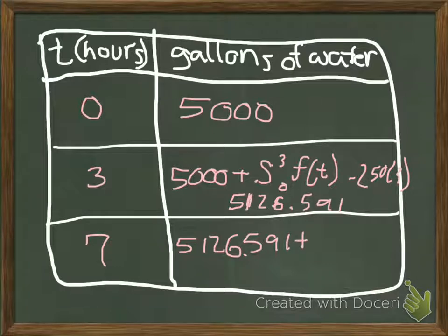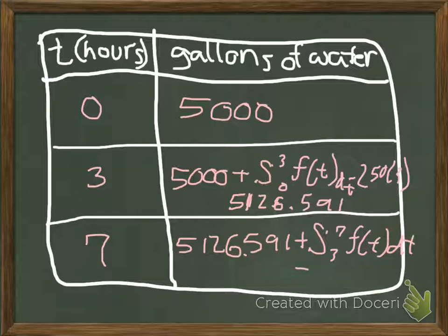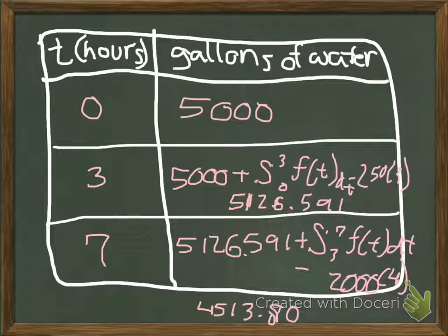You use, you guessed it, integration of F(t) minus 2000 times 4. What you've probably gotten for this one is 4,513.807.